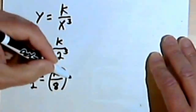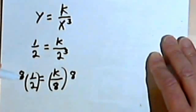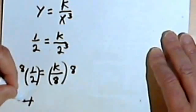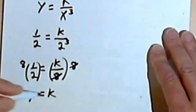So 1 half equals k over 2 to the third power is 8. I want to multiply both sides by 8 to get rid of this fraction here. And 8 times 1 half is 4. So I've got 4 equals, these 8's cancel, 4 equals k.